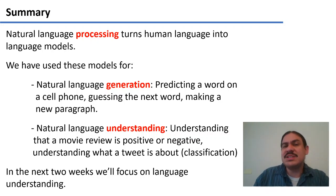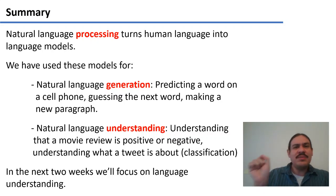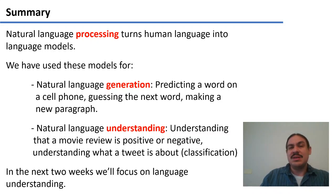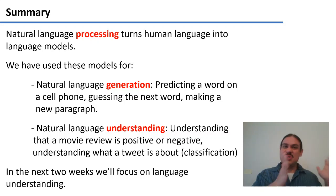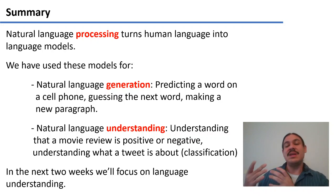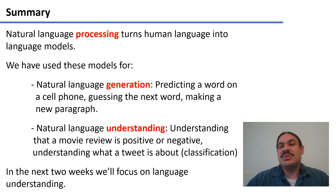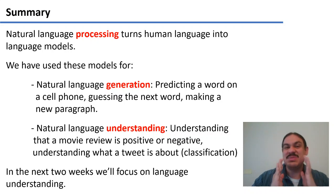We've also done generation where we make a new paragraph, using n-grams and then deep learning. So one of the things we've done with natural language processing is natural language generation. We've also done a little bit of natural language understanding — trying to understand what is said in some text or stretch of language.